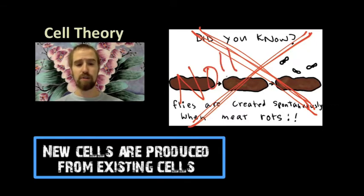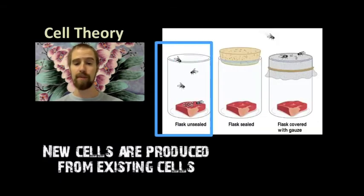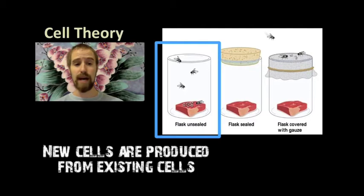What proponents of spontaneous generation didn't see were the fly eggs that had been laid on the meat, and the mold spores that had fallen onto the bread. The eggs hatched, and that's where the maggots came from, and the spores grew into the mold that consumed the bread. These living organisms, made of cells, came from other living organisms who were also made of cells, who reproduced to make new individuals based on their own cells and their own genetics.